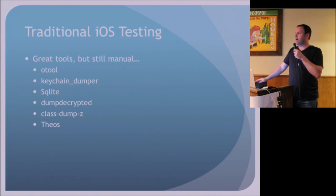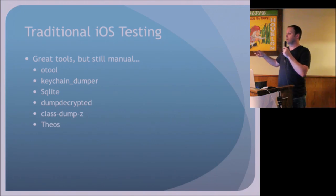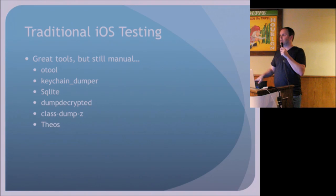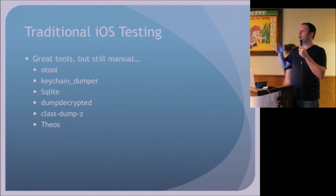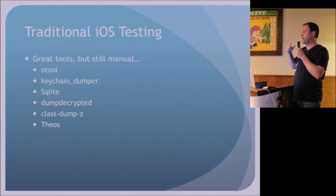Dump-decrypted, created by Stefan Esser, is used when a binary is encrypted — which it generally is. During the runtime process when it's loaded into memory, the device architecture will actually decrypt that binary. In its resting state it is encrypted. This dump-decrypted tool utilizes that process to automatically decrypt the binary. Before this tool, we had to do it manually — we had to gauge the offset, calculate the size, and do a lot of stuff manually.